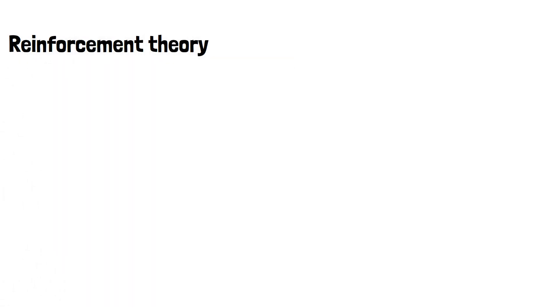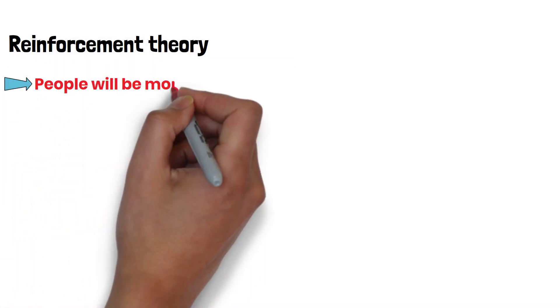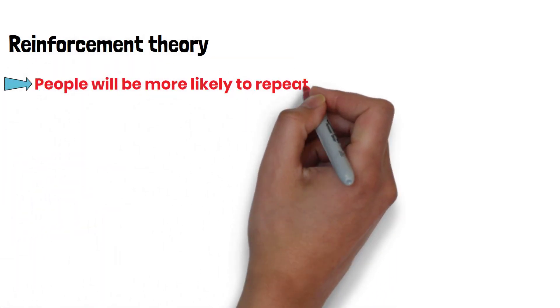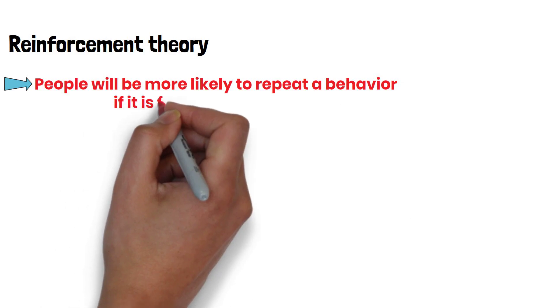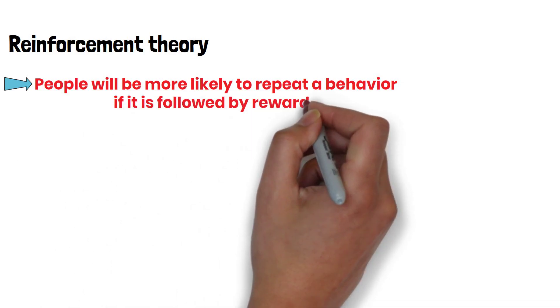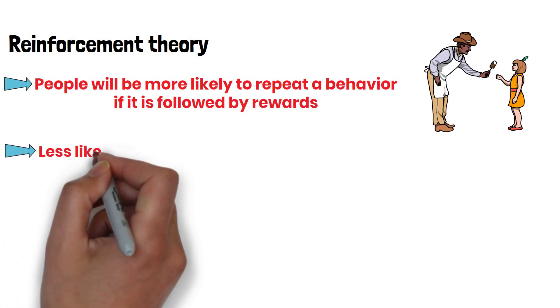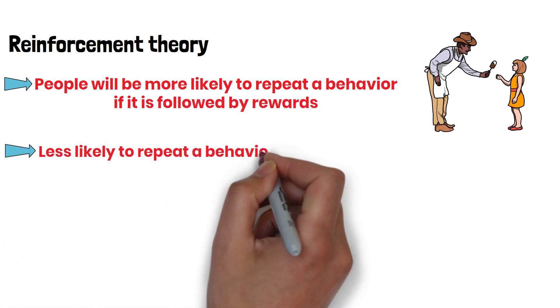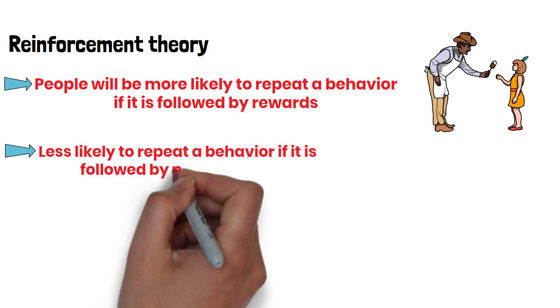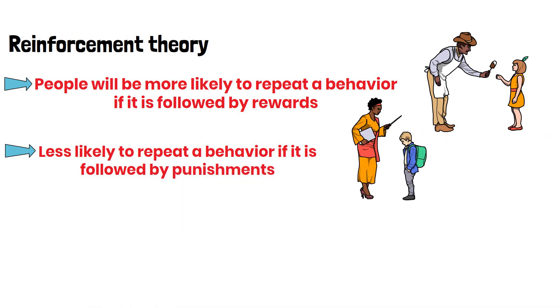Reinforcement theory is a theory that argues people will be more likely to repeat a behavior if it is followed by rewards, and less likely to repeat a behavior if it is followed by punishments.